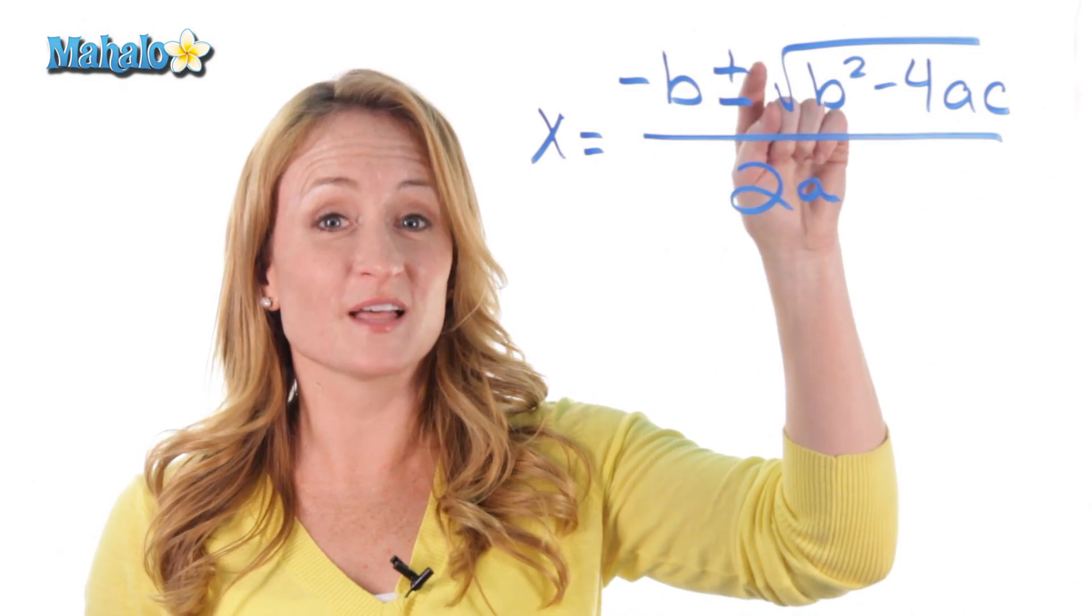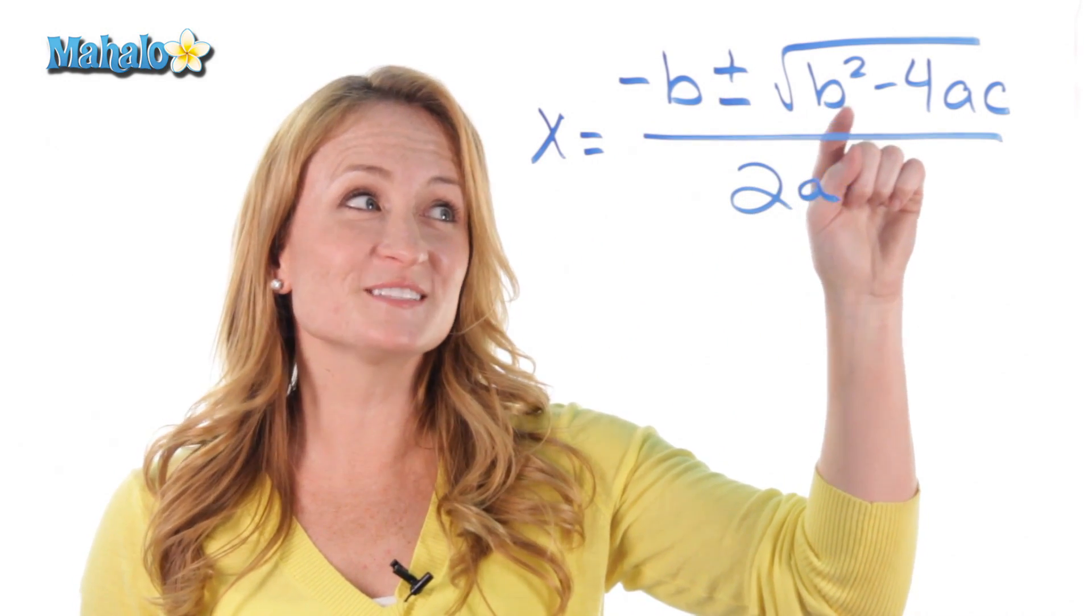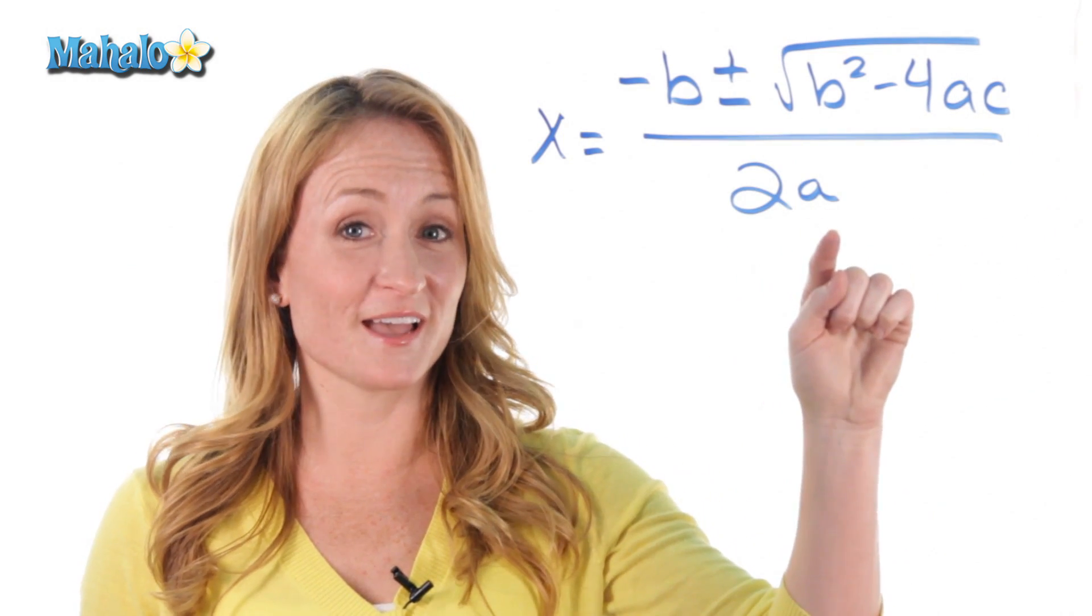X equals opposite B plus or minus the square root B squared minus 4AC divided by 2A.